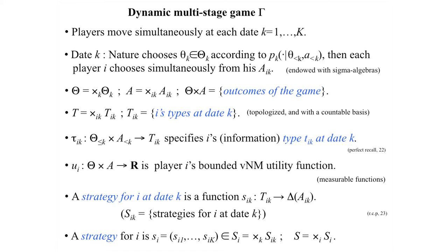Nature's distribution can be fully history dependent. After nature makes her choice at the beginning of date K, players choose simultaneously. Player I makes a choice from action set A_{I,K} at date K. There will be some measurability structure so that expected payoffs are well defined — we have sigma algebras on these objects.